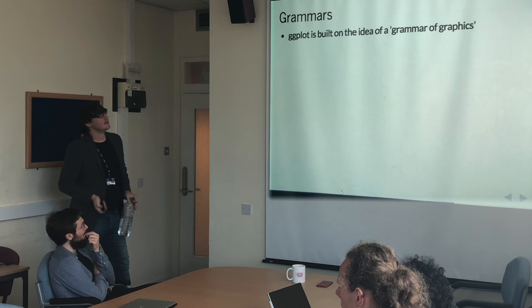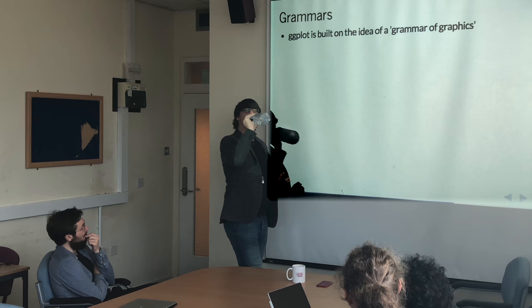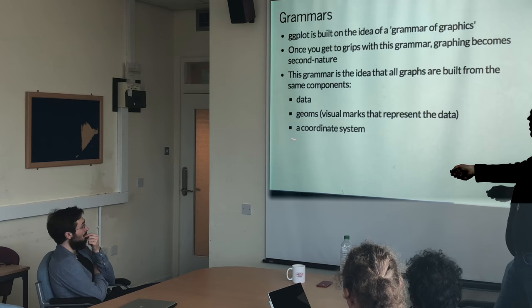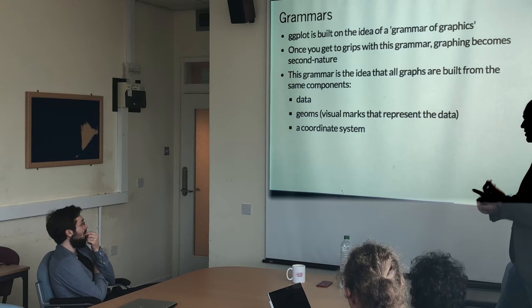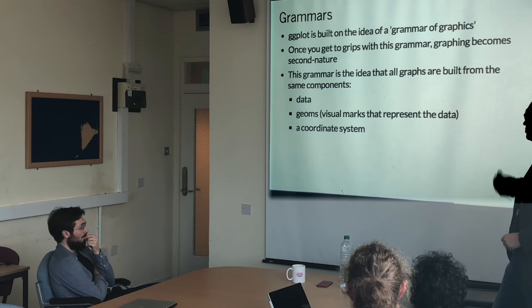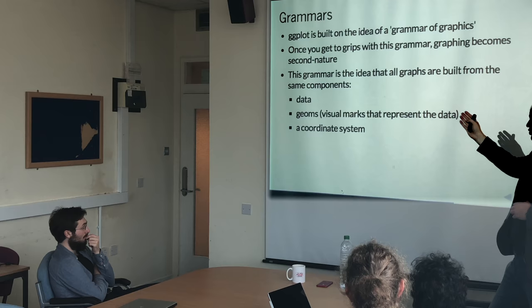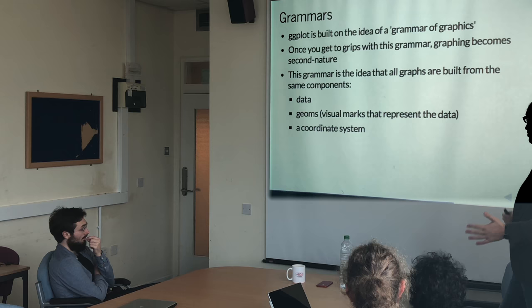The idea behind ggplot2 is it's built on the idea of a grammar of graphics, written by the same guy who came up with the Tidyverse. The idea is that every graph is a combination of three components: your underlying data, some kind of visual marks — whether that's a line, a bar, a box plot, anything you want — and some coordinate system. If you combine these together, or multiple versions of them, you can get a more complex graph. But the idea is you can represent every graph like this.